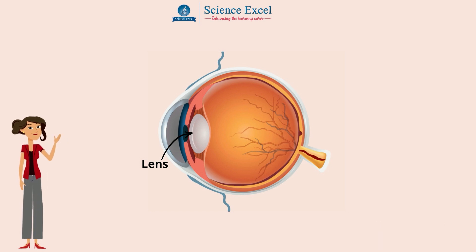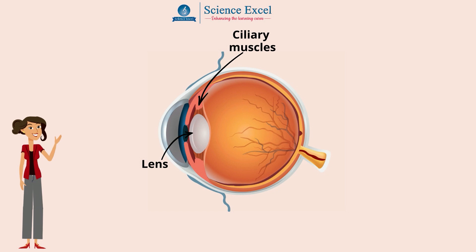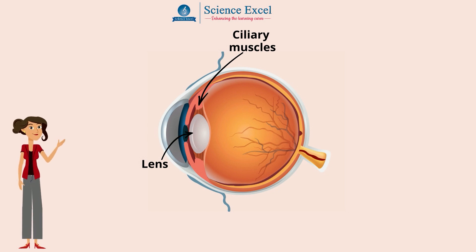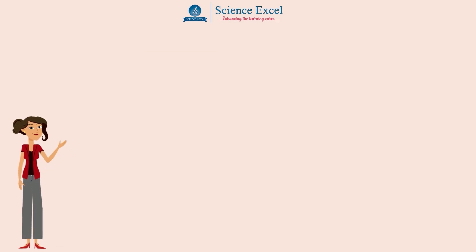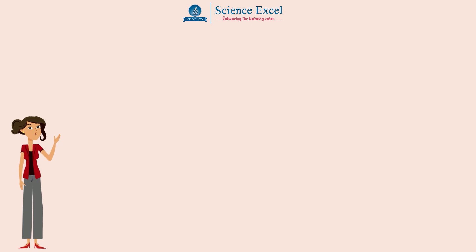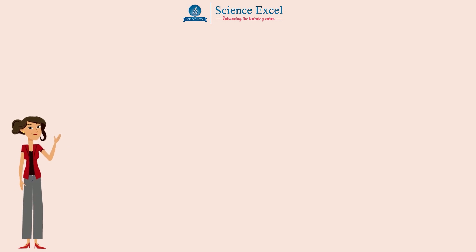The shape of the lens is controlled by the ciliary muscles and it is held in position by a ring of suspensory ligaments. Now let us see how the shape of the lens is changed depending upon the distance of the object from the eye.